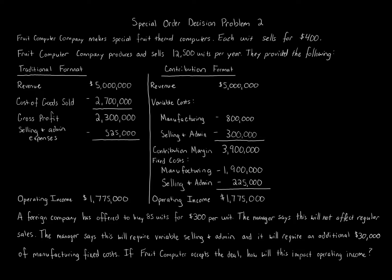This is a special order decision problem. Fruit Computer Company makes special fruit-themed computers; each unit sells for $400. The company produces and sells 12,500 units per year. Under the traditional format, revenue is $5,000,000 minus cost of goods sold of $2,700,000, giving a gross profit of $2,300,000. Under the contribution format, revenue is $5,000,000 minus variable manufacturing costs of $800,000 and variable selling and administrative of $300,000, giving a contribution margin of $3,900,000.